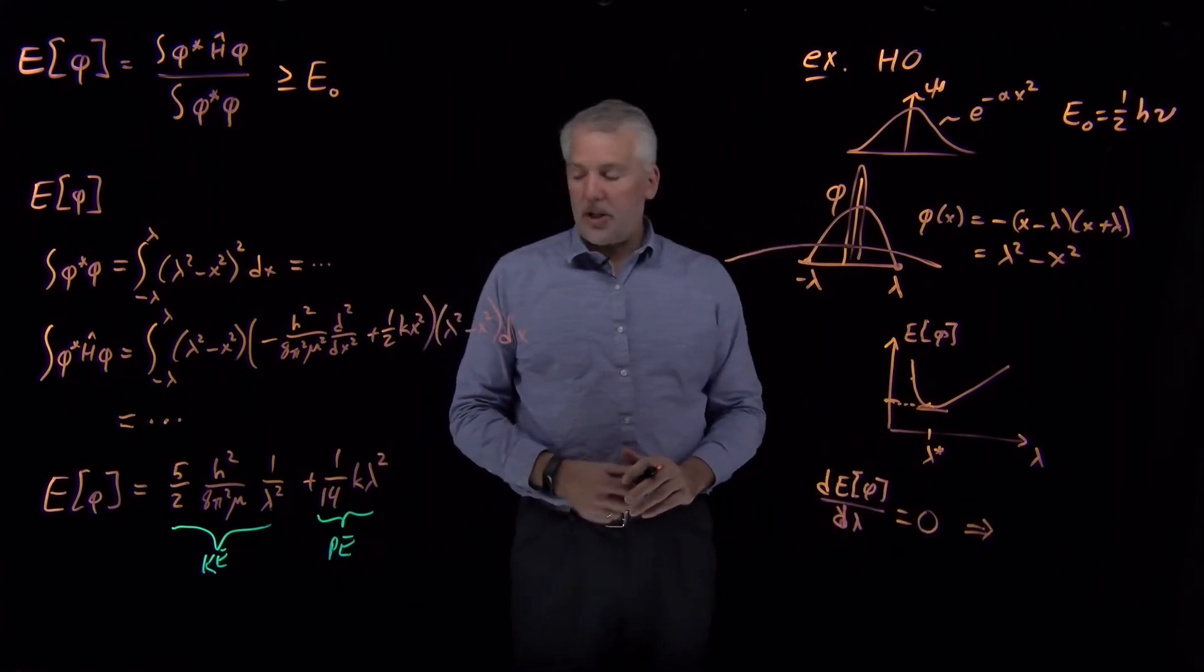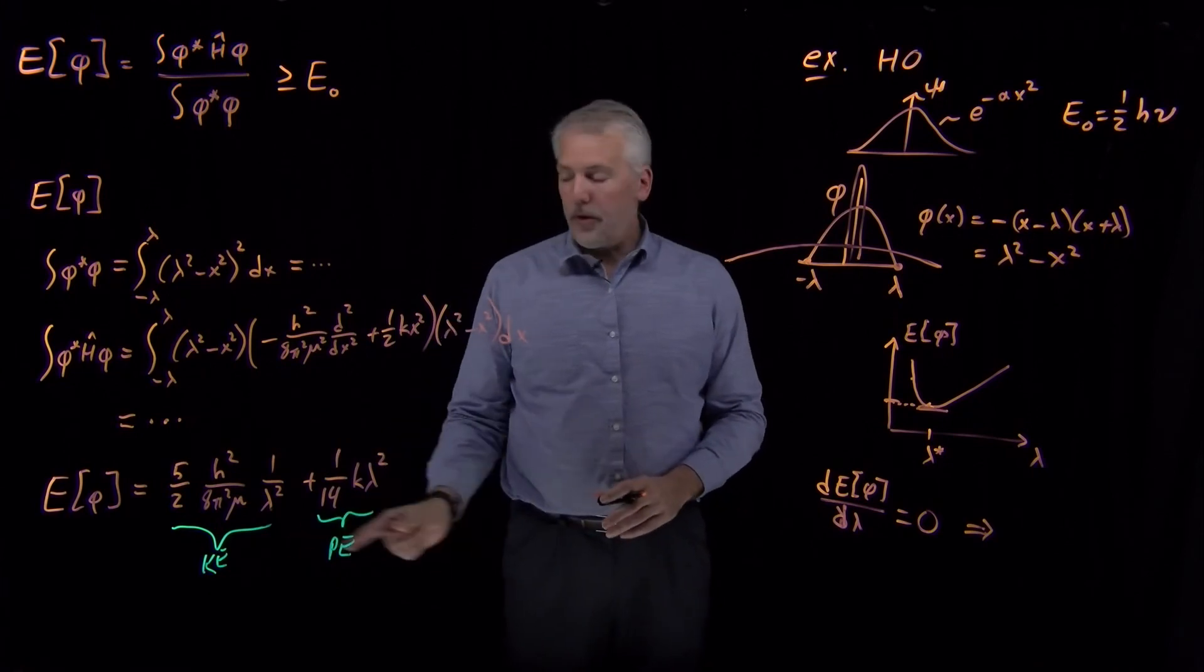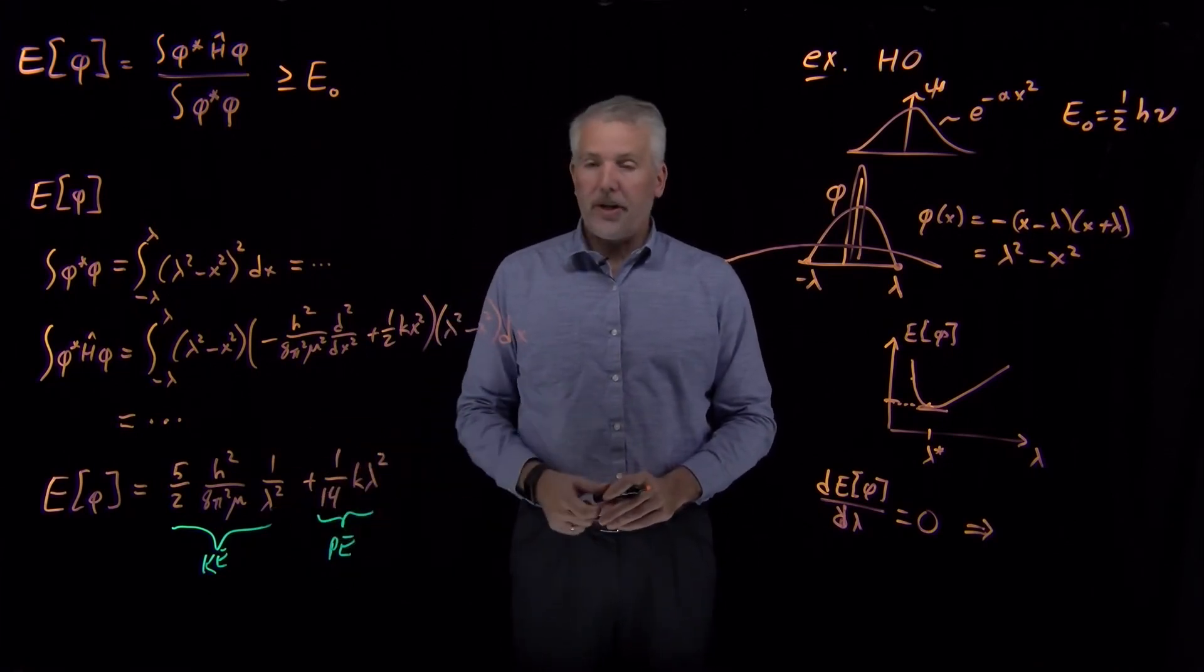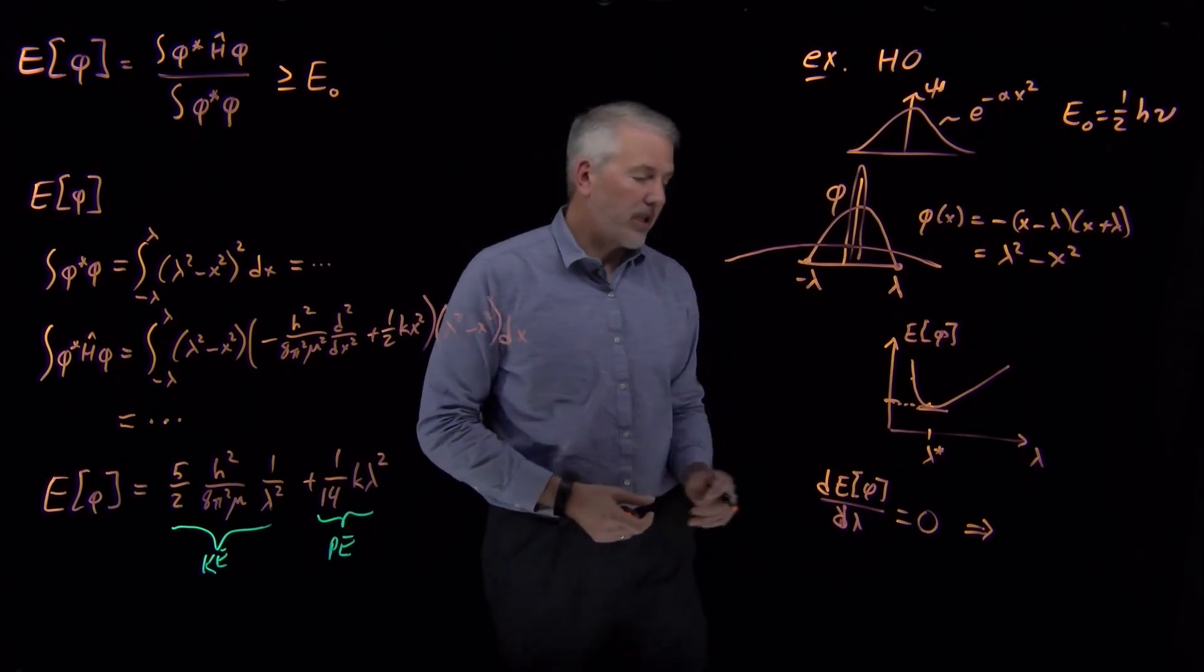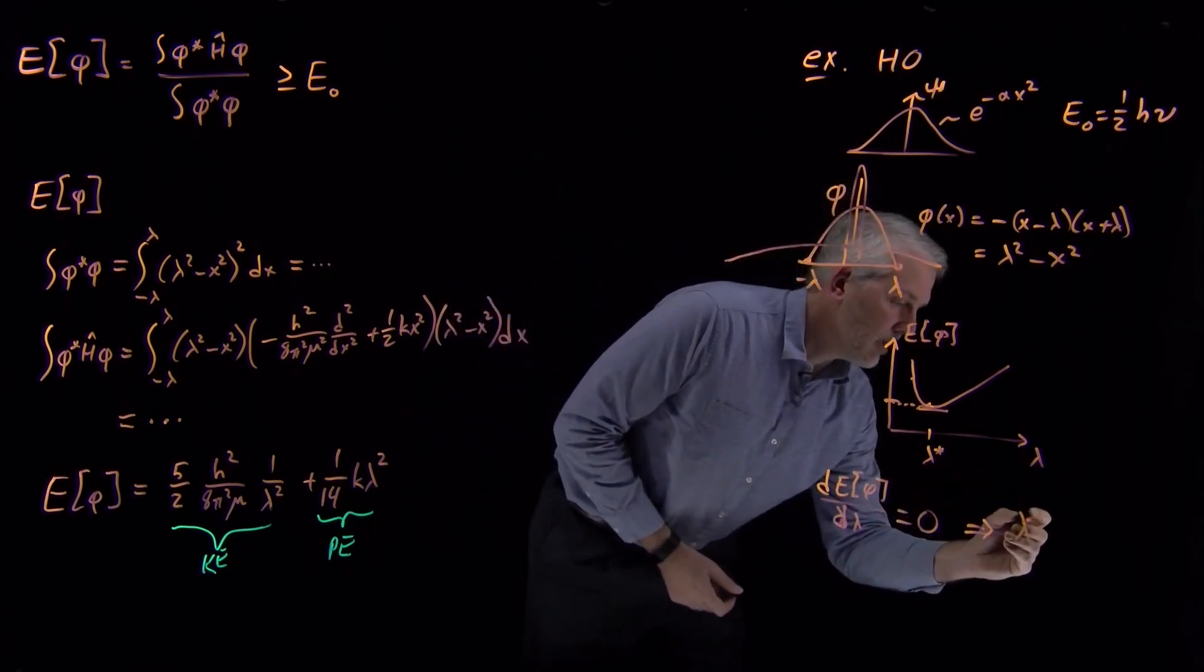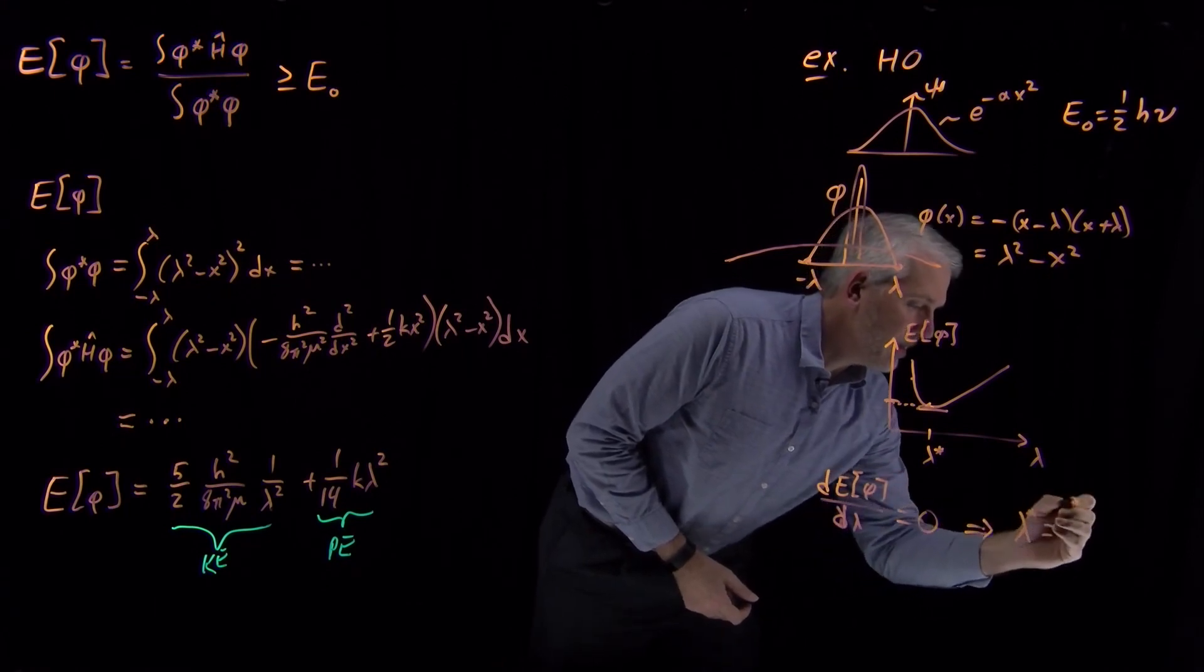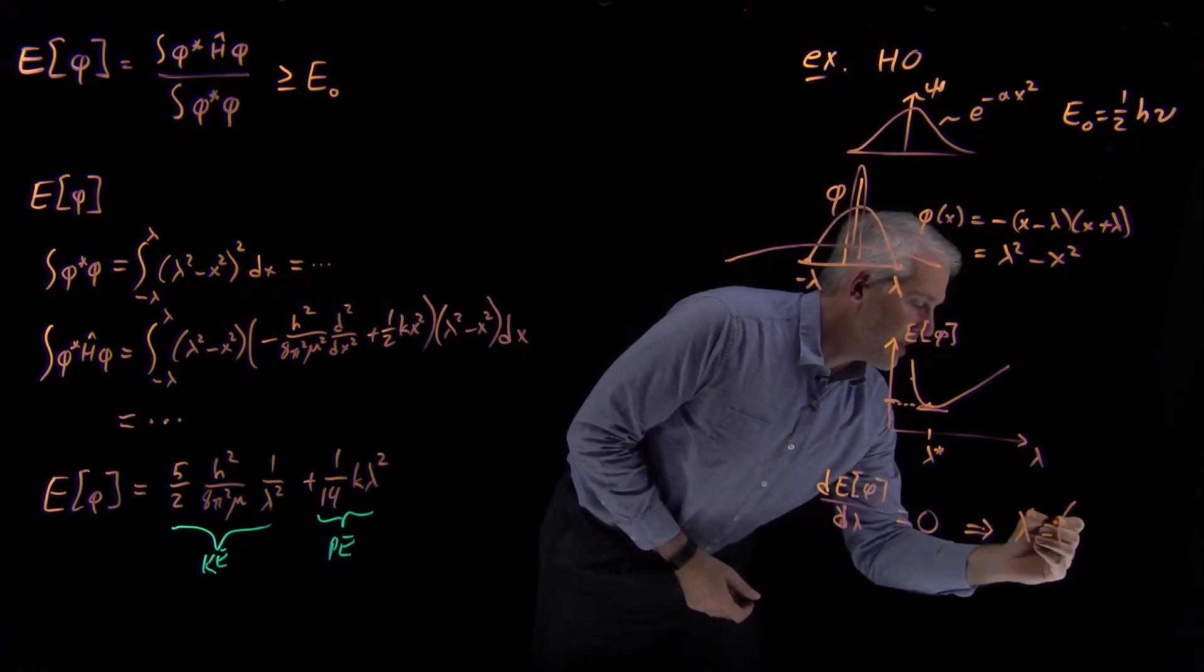If we work through the algebra, so I have an expression here, I could take the derivative with respect to lambda, set it equal to zero, I can solve for the value of lambda that makes that function at a minimum. And what I find is that optimal value of lambda works out to be some not particularly interesting collection of constants.